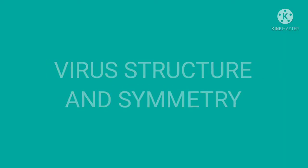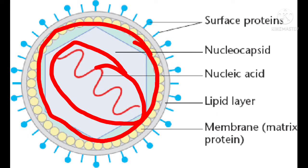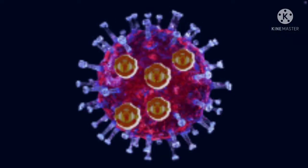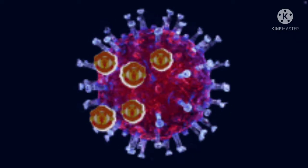Virus structure and symmetry: the virion consists of a nucleic acid core surrounded by a protein coat called the capsid. The capsid together with the enclosed nucleic acid is known as the nucleocapsid. The capsid is composed of a large number of protein subunits or polypeptides known as capsomeres.